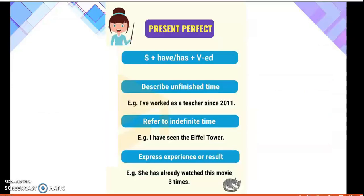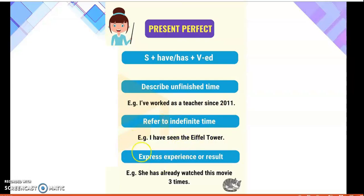Let's revise all the things we have learned. For present perfect: we make it with subject plus 'have' or 'has' — these are the helping verbs — plus the verb in its third form, made by adding 'ED' to the end. We use present perfect when we describe unfinished time, for example 'I have worked as a teacher since 2011'; when we refer to indefinite time, for example 'I have seen the Eiffel Tower' without specifying how many times; or when we express experience or result, for example 'she has already watched this movie three times.'